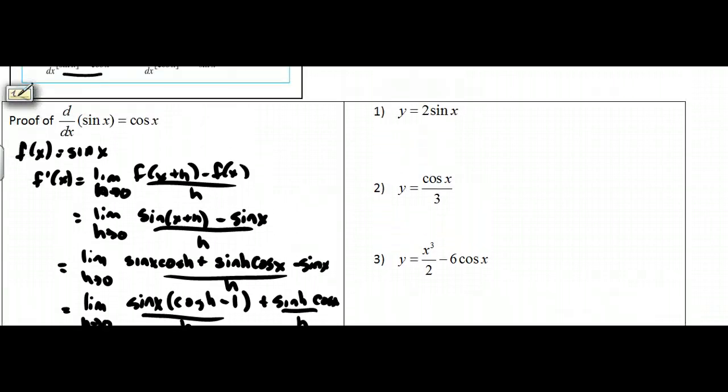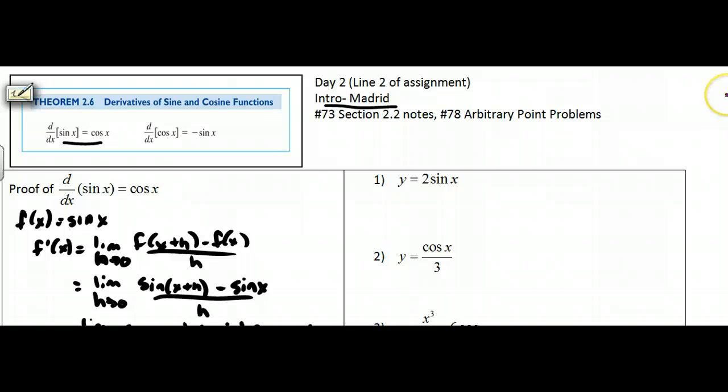In your homework, you'll have to prove the derivative of the cosine of x. So let's apply some of these rules. Remember this is a constant multiple, it goes along for the ride. So the two just goes along for the ride. The derivative of the sine of x is the cosine of x. Finished. This one is a coefficient of one-third. So if you wish, you could write it like this. The derivative of the cosine is negative sine. So I'd get negative one-third sine of x.